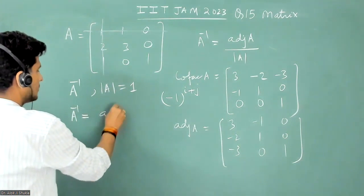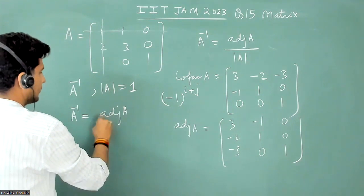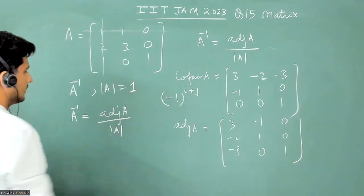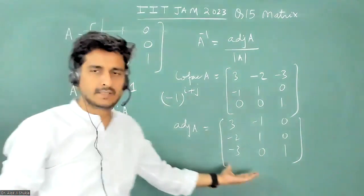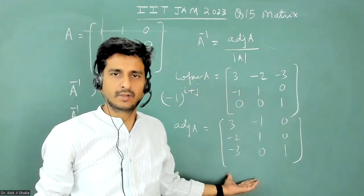So A inverse is the same as the adjoint A matrix. Thank you.